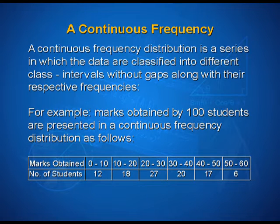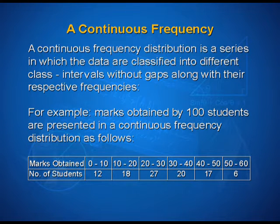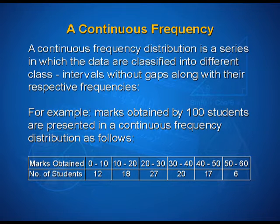The corresponding number of students are 12, 18, 27, 20, 17, and 6. That means 12 students have got marks between 0 to 10, 18 students have secured marks between 10 to 20, and 27 have secured marks between 20 to 30, and so on.